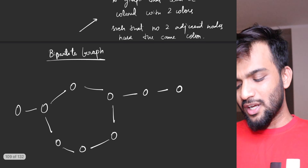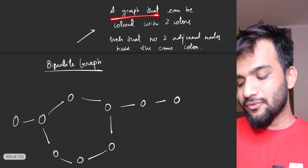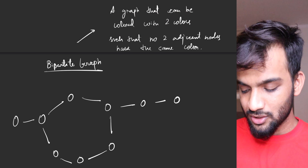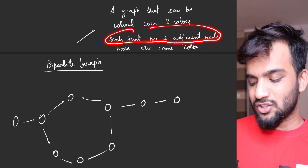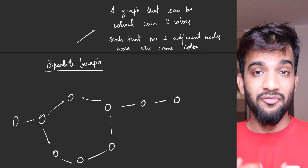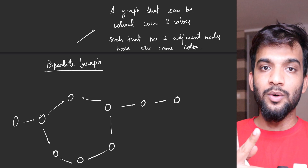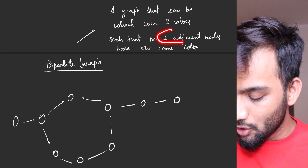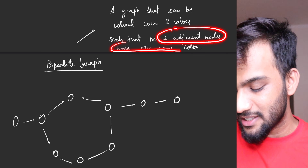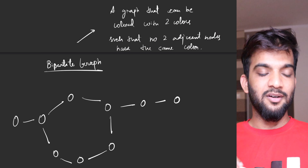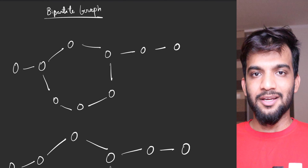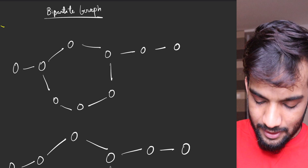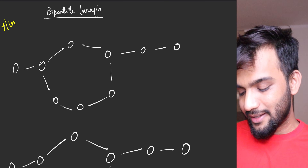Given a graph, a bipartite graph is one that can be colored with exactly two colors such that no two adjacent nodes have the same color. You are given two colors and you need to use those two colors to color a graph such that no two adjacent nodes have the same color. The two colors can be anything - black, white, yellow, green, or whatever. So let's take yellow and green.